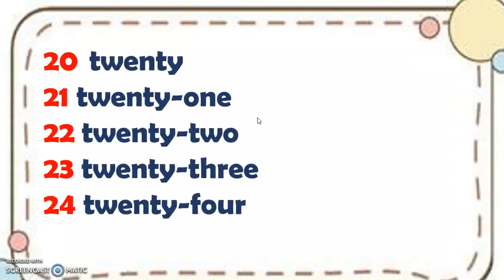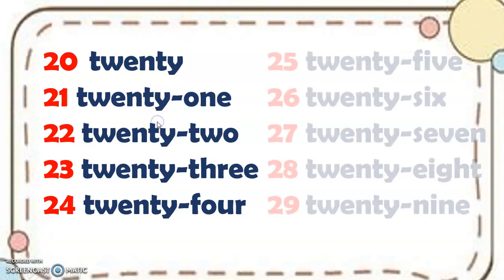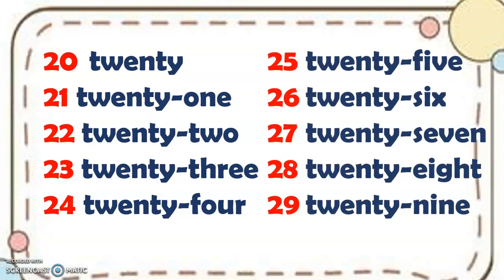Now, these are the numbers that we need to remember when we read and write them, especially their correct spelling. So we have here 20, 21, 22, 23, 24, 25, 26, 27, 28, and 29. As you notice, grade 1, there's a dash between the number 20 and 1. Always remember to put a dash whenever you are writing numbers from the skip counting by 10 and the numbers from 1 to 9, just like what we have here from 21 up to 29.